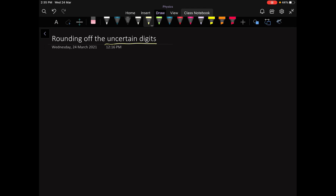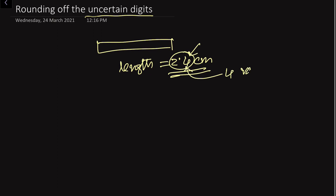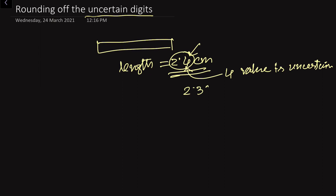What are uncertain digits? We have already seen in our previous lectures. Suppose if we have measured a rod and the length is found to be 2.4 centimeter — in this case we have two significant digits, but the 4 value is uncertain. This may be 2.35, or it may be 2.45, or it may be 2.5, or it may be 2.3. So this last digit, 4, is the uncertain value.